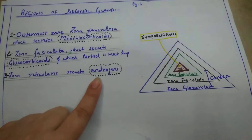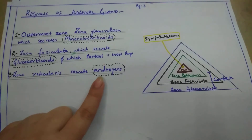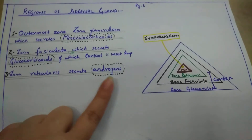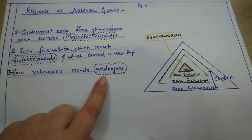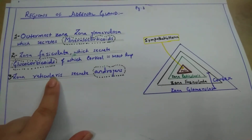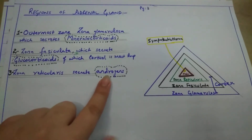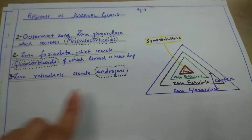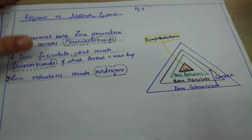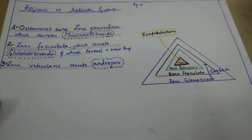Androgens are specifically produced in males — they are male-related hormones. But in the case of females, a small amount of androgen is produced by the zona reticularis. Since females do not have testes, this region provides the androgen, which is then converted into estrogen and progesterone — the female hormones.